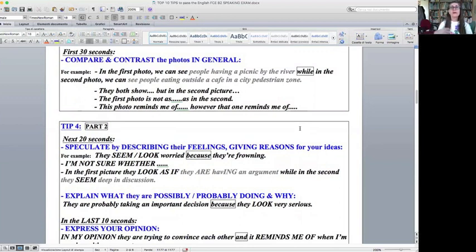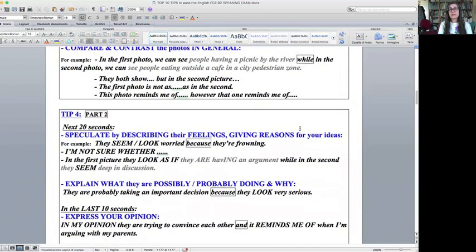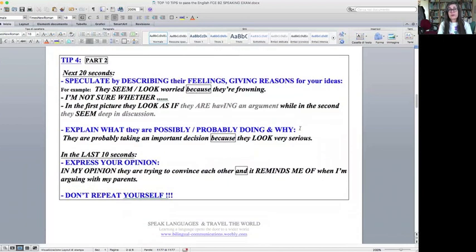So in the first 30 seconds, remember not to describe, that isn't what they want. They want comparing and contrasting. So you could, for example, give a general comparing and contrasting by saying in the first photo we can see people having a picnic by the river, while in the second photo we can see people eating outside the cafe in a city pedestrian zone. They both show, but in the second picture. The first photo is not as as in the second. This photo reminds me of, however that one reminds me of.